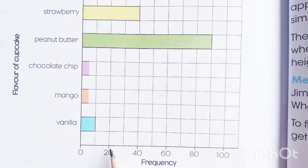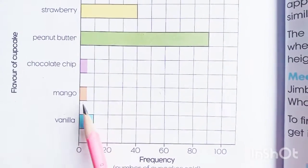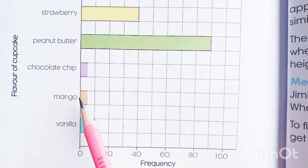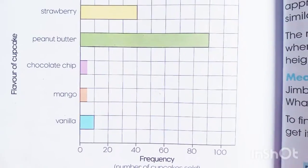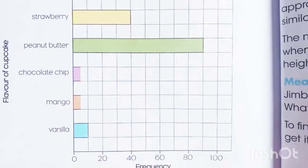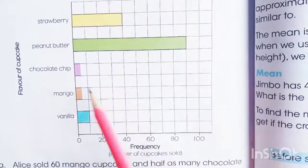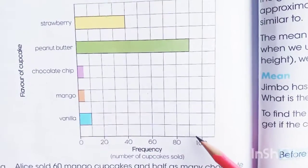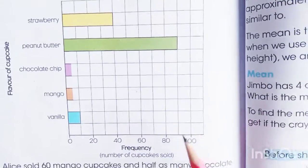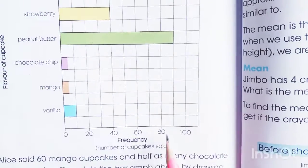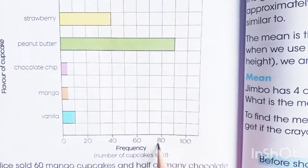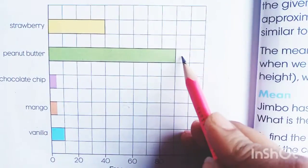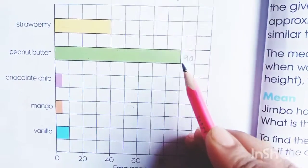Vanilla is 20, and mango and chocolate chips are incomplete — we will solve those. For peanut butter flavor cupcake, the bar is coming between 80 and 100, so in the center of 80 and 100 we have 90. We will write the number 90.